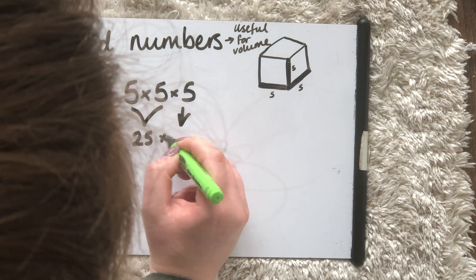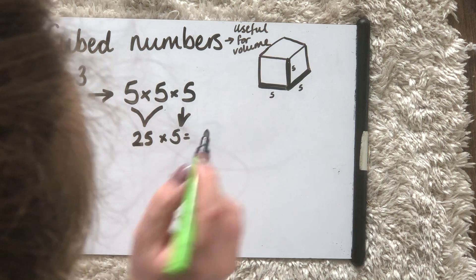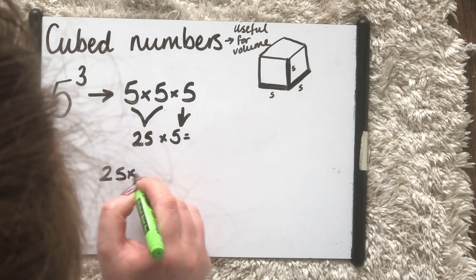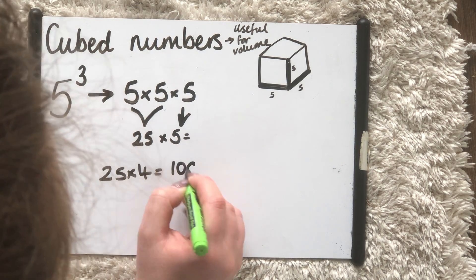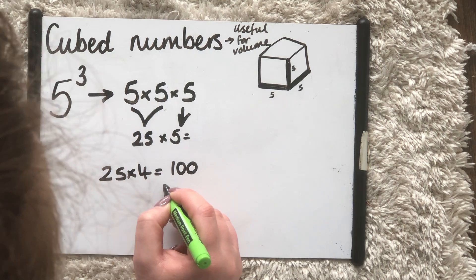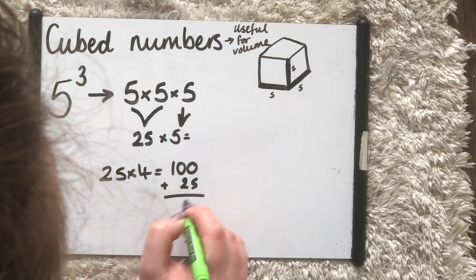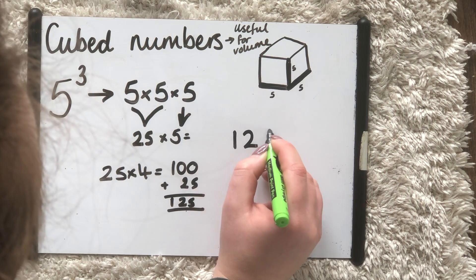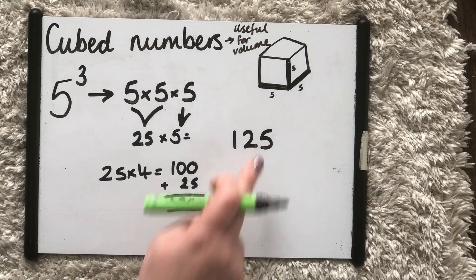I now need to do 25 times 5. Well, I know that 25 times 4 is 100, and then I can just add on another 25, which will give me 125.